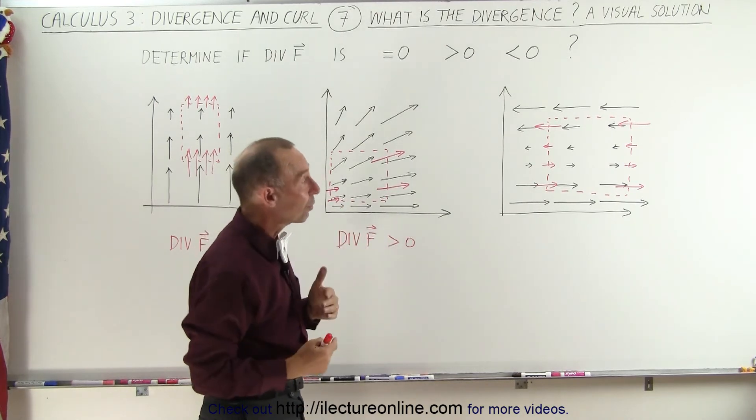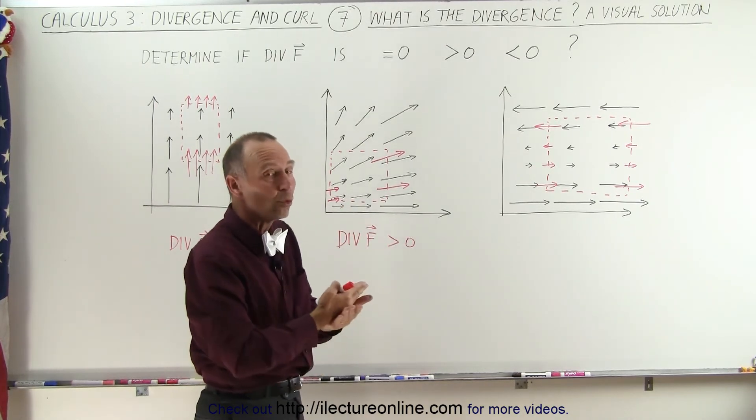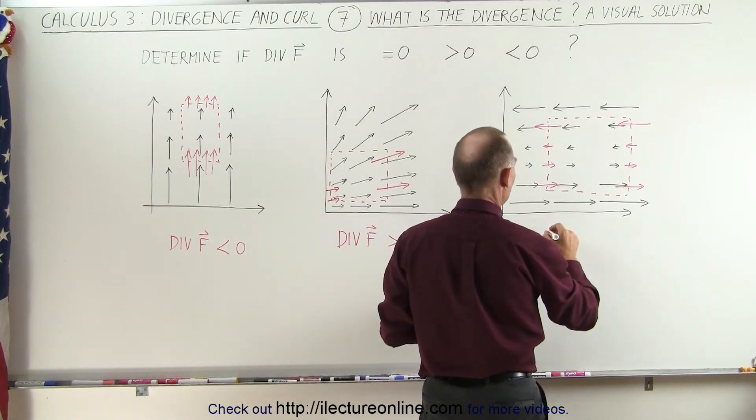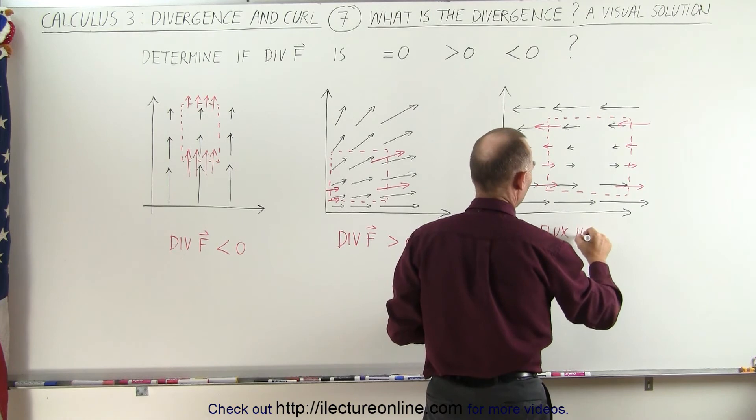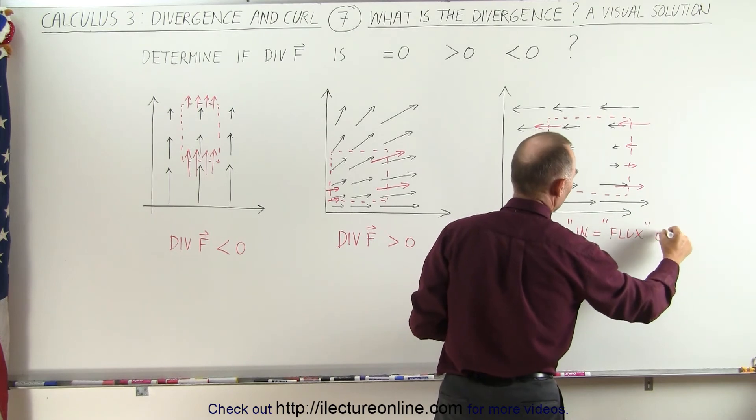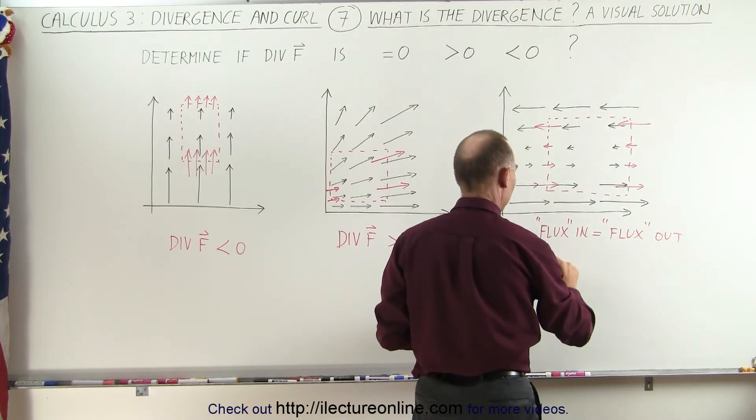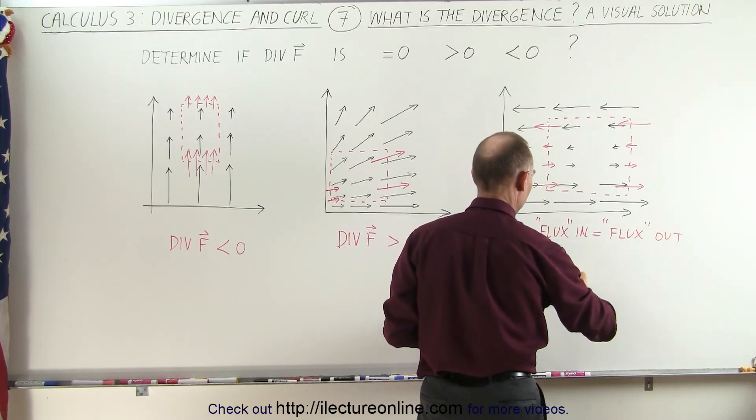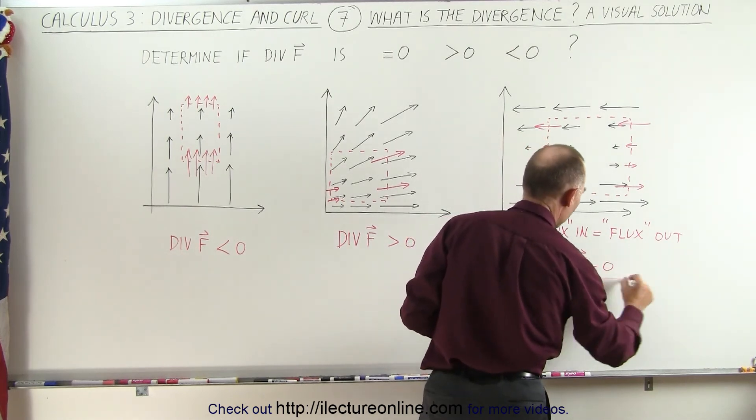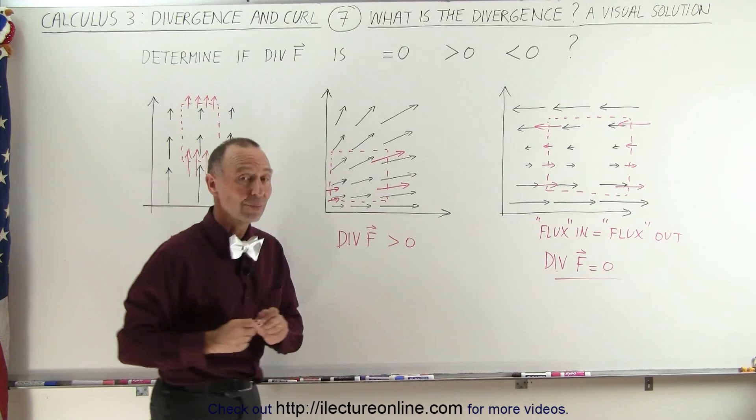So therefore, there's no net change in flux. You can say that the flux in is going to be equal to the flux out. And that way we can determine that the divergence of the vector field must be equal to zero.